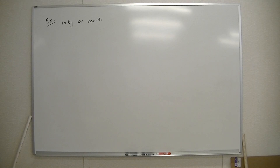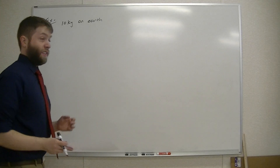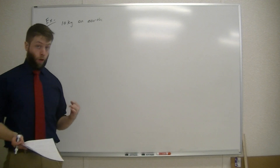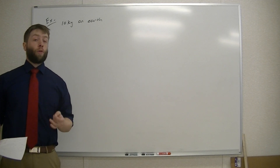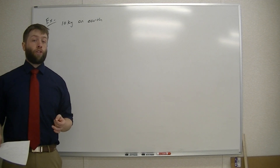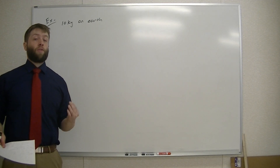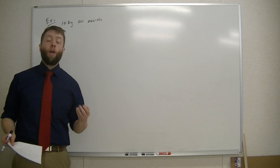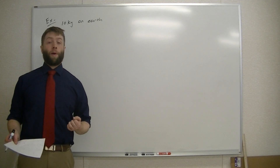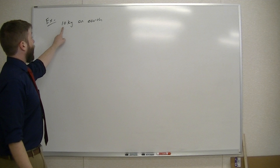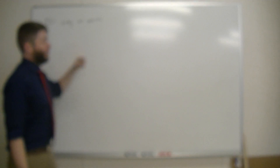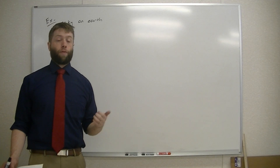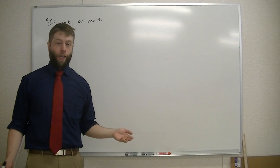The next example is all about showing consistency with what we've done before. I want to show that the new force of gravity equation makes sense with how we were measuring the force of gravity before when we were talking about objects on Earth. So here we have a 10-kilogram mass on the surface of the Earth, and I want you to figure out the force of gravity on it.